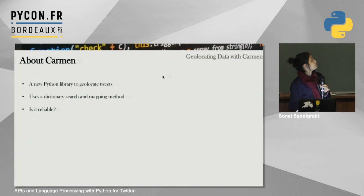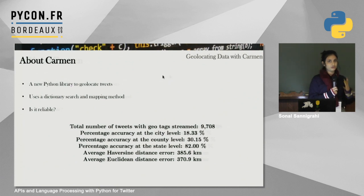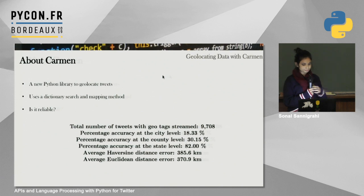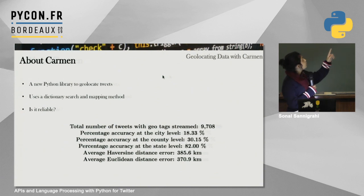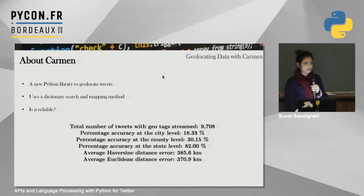To reliably use Carmen, you need to see how accurate it is at each level. I streamed about 9,708 tweets with geotags, stripped them of the geotag, then used Carmen to compare results. At the state level, accuracy is 82%. At the county level, 30.15%. And at the city level, 18.33%. The state level is quite accurate and reliable, but at the city level, not so much.